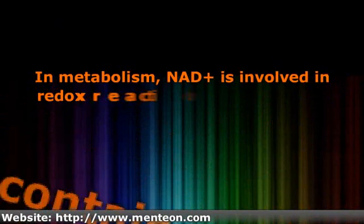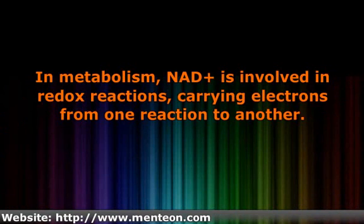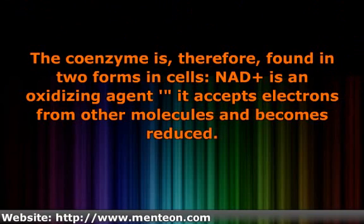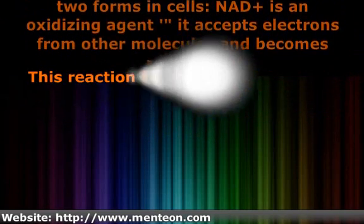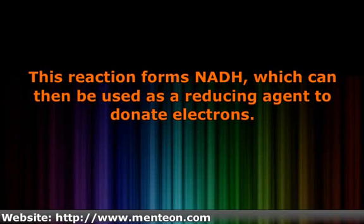In metabolism, NAD+ is involved in redox reactions, carrying electrons from one reaction to another. The coenzyme is therefore found in two forms in cells. NAD+ is an oxidizing agent that accepts electrons from other molecules and becomes reduced. This reaction forms NADH, which can then be used as a reducing agent to donate electrons.